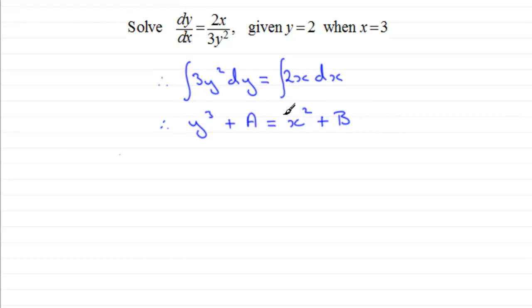Now, we don't normally do this by writing an A and a B on both sides. What we tend to do is just write one constant. And this is the reason for this tutorial. Which side do you put the constant on? Well, let's just suppose we decided to take this constant here from the left hand side. What we're going to be left with is therefore y cubed would equal x squared and then would have B minus A.